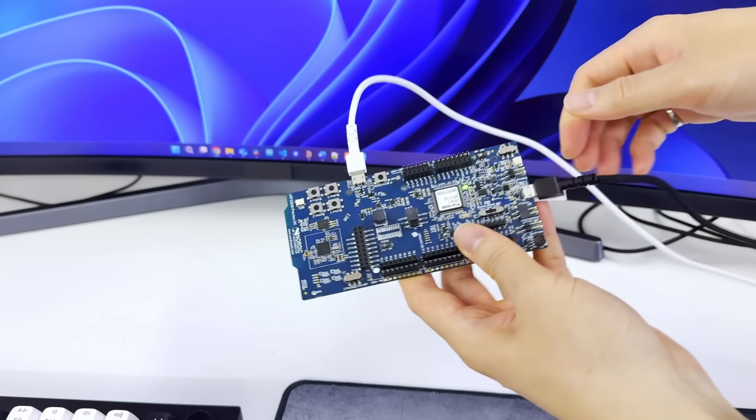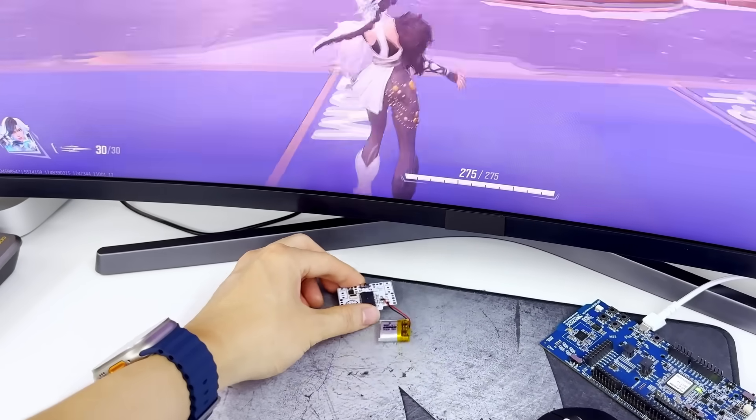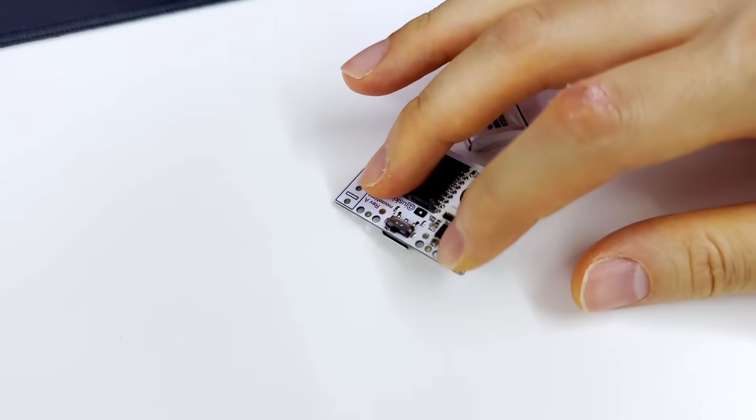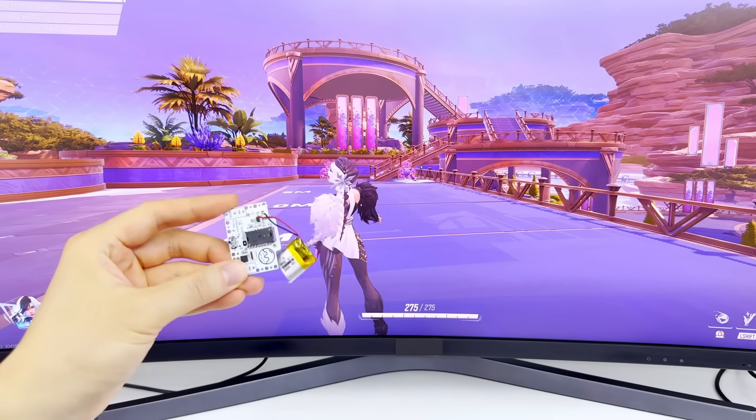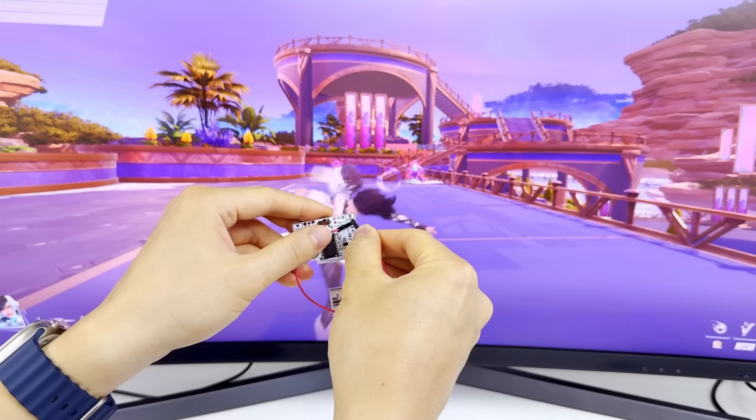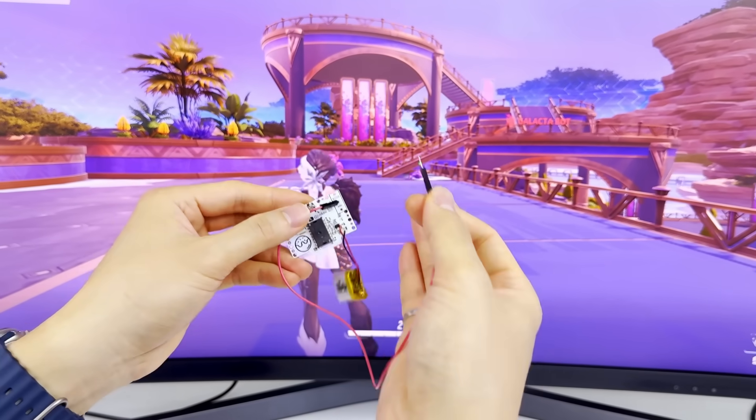Now for the real test. Let's set up our receiver and see if we can move the mouse. And we have movement. But what about the left and right clicks? Well, we're definitely missing the switches, but we can do a quick test by shorting the metal pads with a wire.